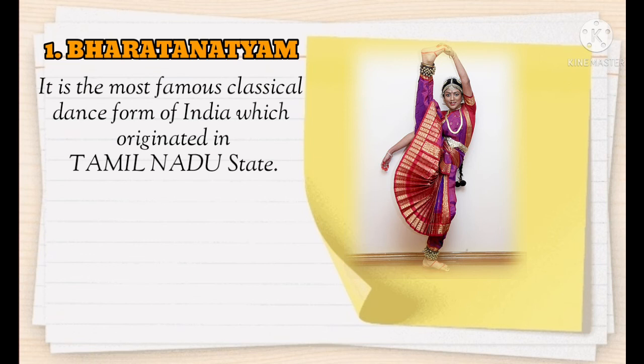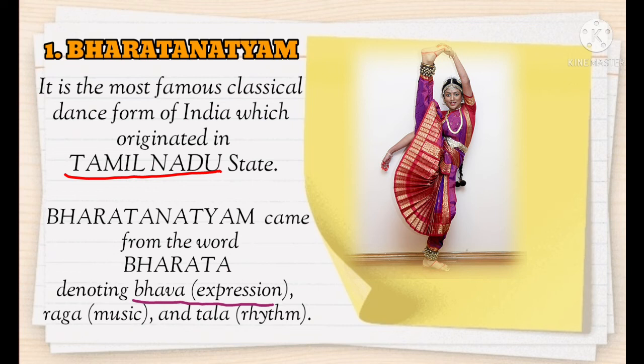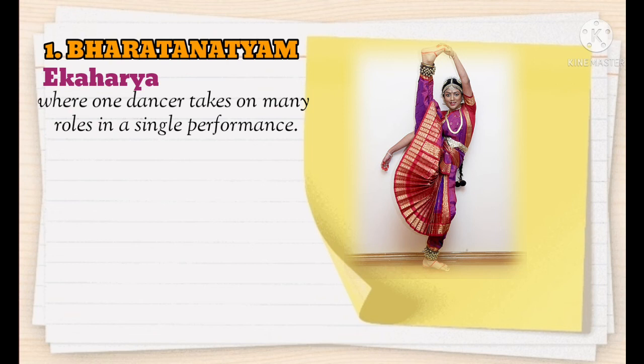Number one is Bharatanatyam — it is the most famous classical dance form of India, which originated in the state of Tamil Nadu. Bharatanatyam comes from the word 'bharata,' where 'bha' denotes bhava meaning expression, 'ra' means raga meaning music, and 'ta' means tala meaning rhythm.